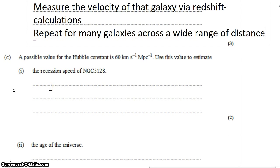A possible value for the Hubble constant is 60 kilometers per second per megaparsec. Use this value to estimate the recession speed of the galaxy NGC 5128.